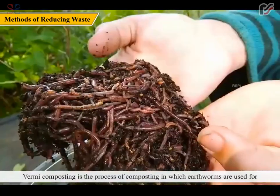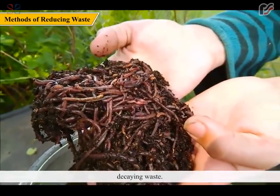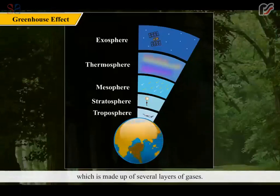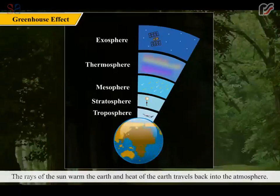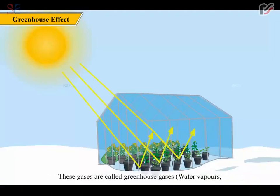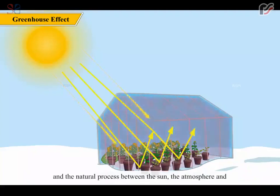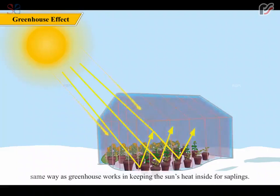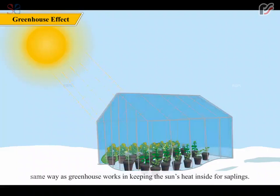Vermicomposting is the process of composting in which earthworms are used for decaying waste. The Earth is wrapped in a blanket of air called the atmosphere, which is made up of several layers of gases. The rays of the sun warm the Earth, and heat travels back into the atmosphere. Some gases stop some of that heat from escaping into space — these are called greenhouse gases: water vapor, carbon dioxide, methane, nitrous oxide, and ozone. This natural process is called the greenhouse effect, named because it works similarly to how a greenhouse keeps the sun's heat inside for saplings.